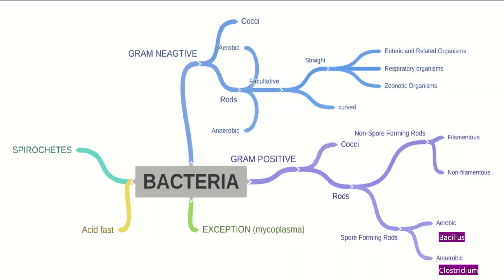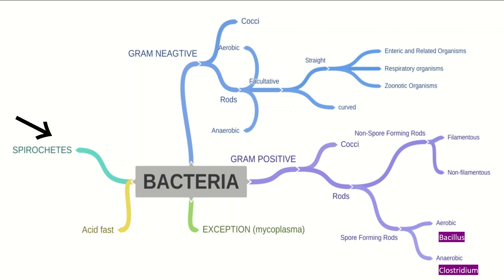Before talking about Bacillus cereus, I want to give a quick recap of bacterial classification. Bacteria are classified based on gram staining into gram positive and gram negative, and also on the basis of acid-fast staining. There are also other bacteria like spirochetes and mycoplasma. We are not concerned with gram negative today because Bacillus cereus is gram positive.